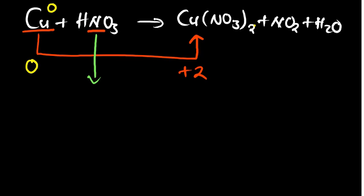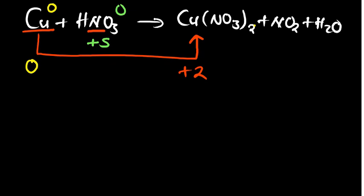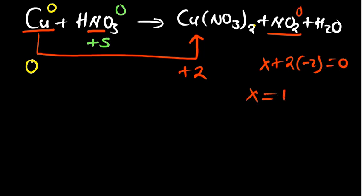For nitrogen in nitric acid (HNO₃): hydrogen has plus 1, let x denote nitrogen, and we have 3 oxygen atoms each at minus 2, with a net charge of 0. So x equals plus 5. On the other side, in nitrogen dioxide (NO₂), x plus 2 times minus 2 equals 0, so x equals plus 4.